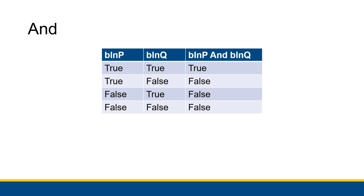If boolean q is false, the whole statement is false because both of them are not true — at least one is false. If boolean p is false, the whole statement is false because it is not true that both of them are true. And if both of them are false, the claim is proved false in two ways, although it only needed to be proved false in one way. When we use the AND operator, Visual Basic checks both of them.